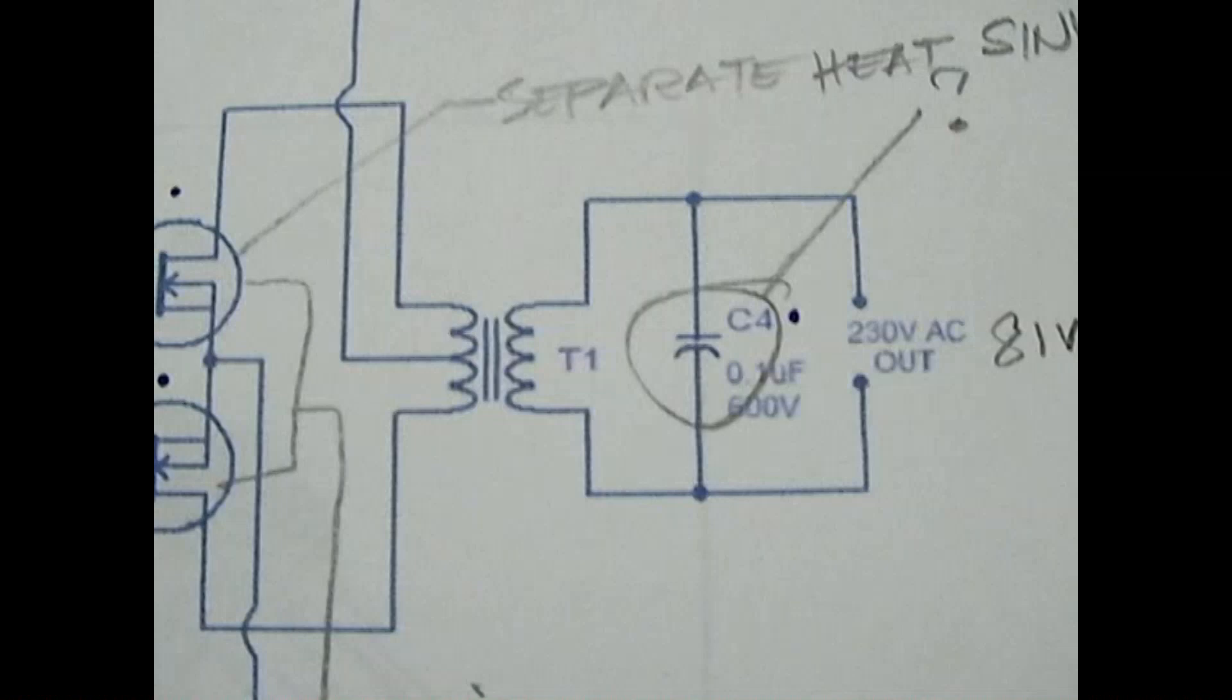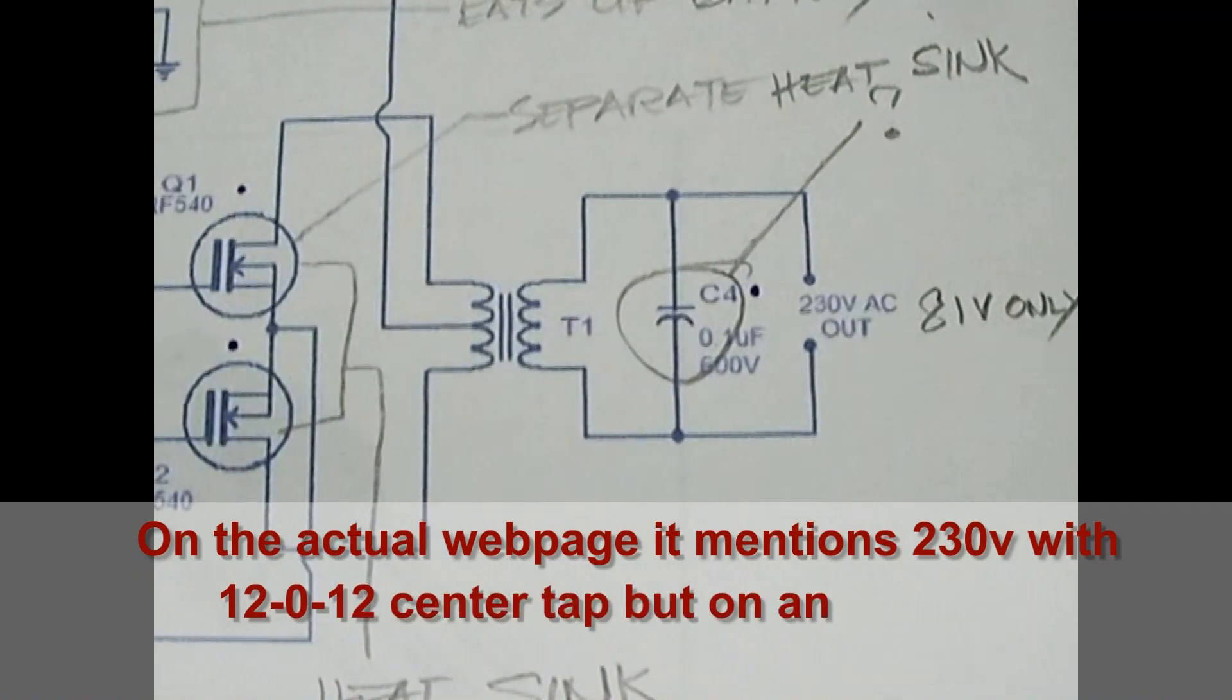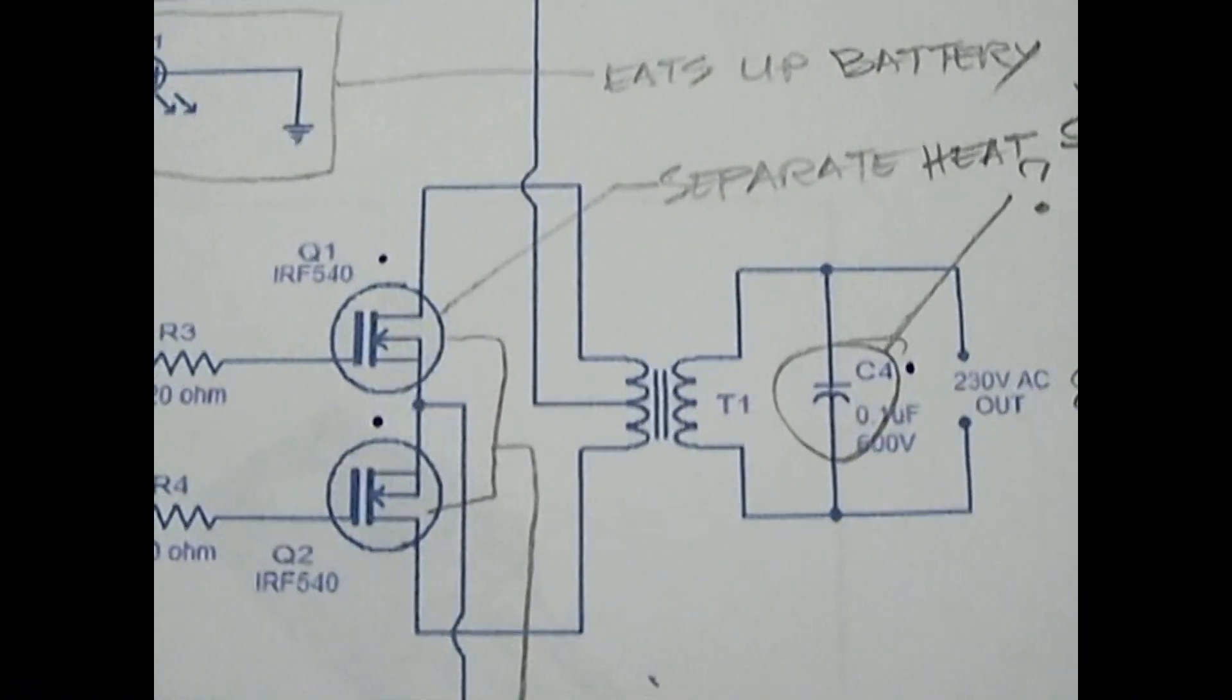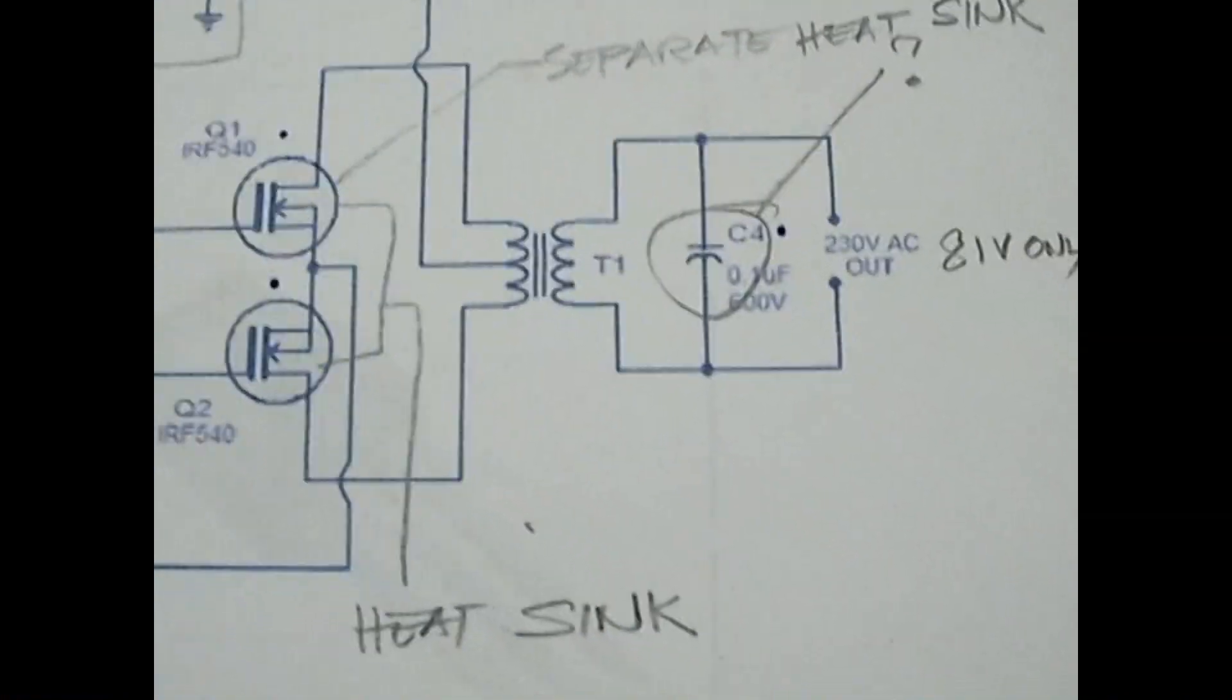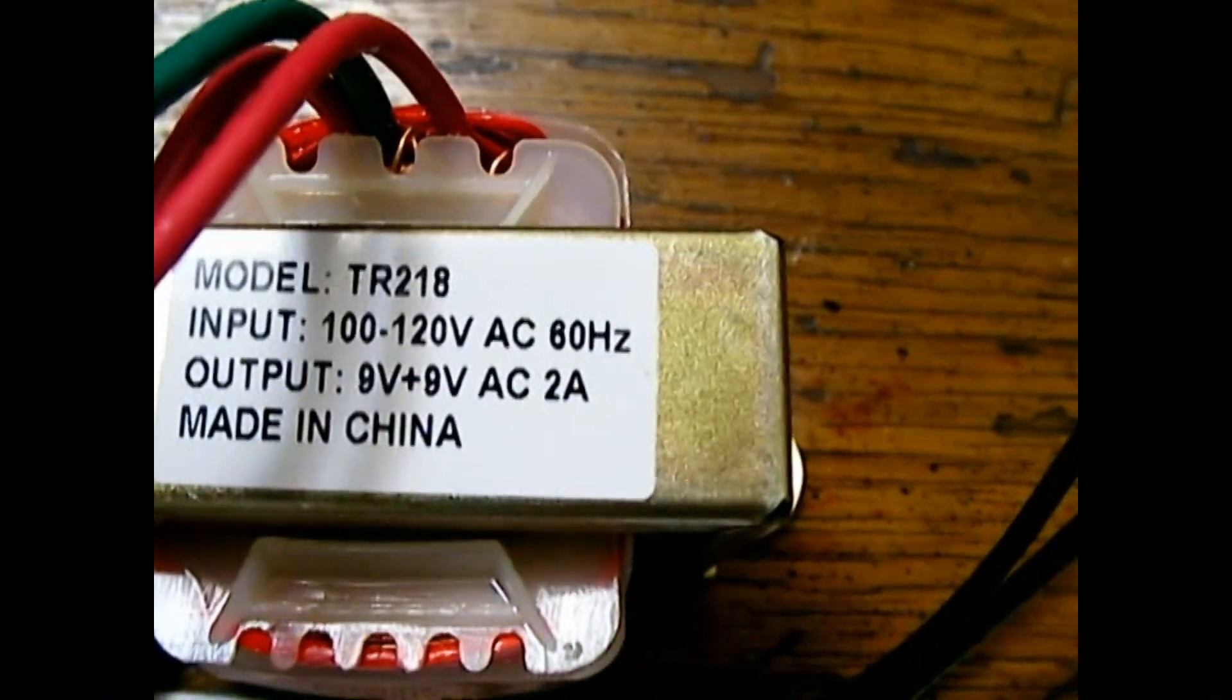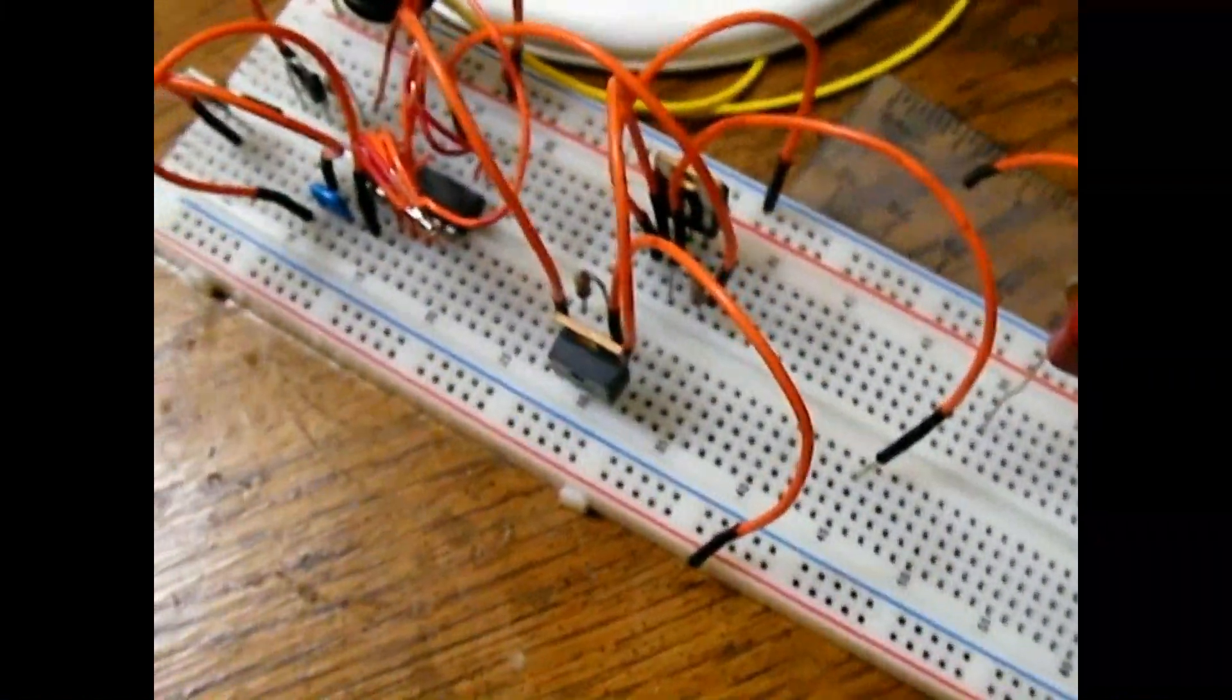It's showing here a transformer, but they never mentioned what kind, although it's a center tap. I've tried the 12-0-12, and I've been getting only 84 volts with no load. So instead, I'm using this one - it's 9 plus 9 with the center tap. And with this on this circuit, which I will show in the next part of my video,